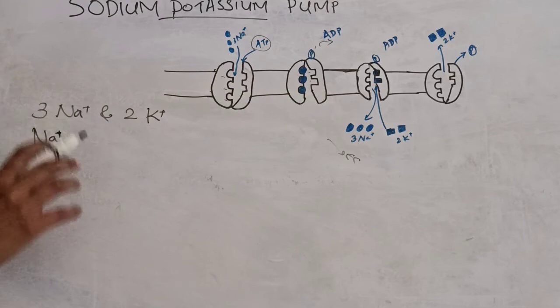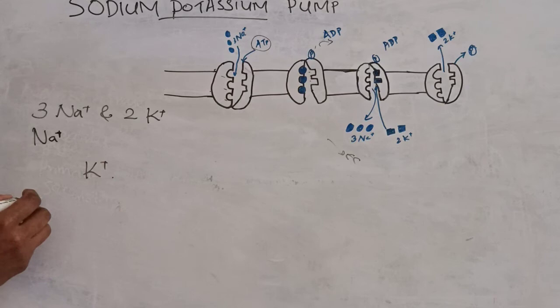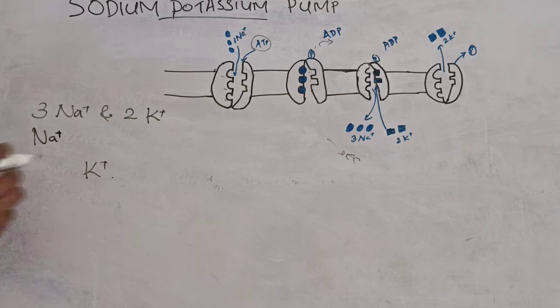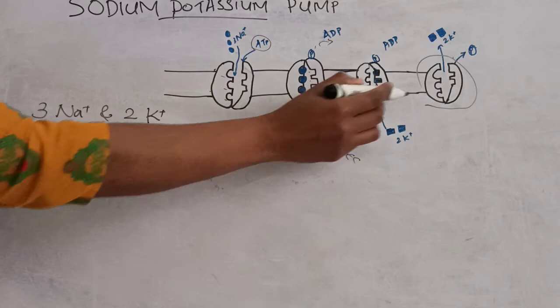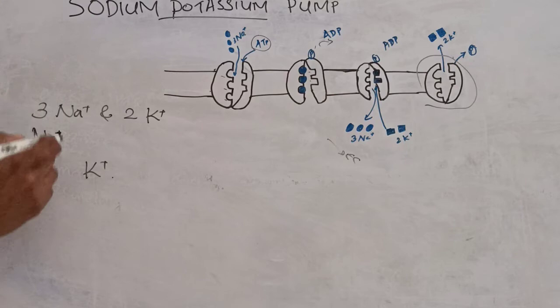This phosphorylated form of the pump has high affinity for potassium ions, so 2 potassium ions bind to the pump. This binding of the 2 potassium ions induces dephosphorylation of the pump — that means phosphate is released — causing another conformational change, and potassium ions are released into the cell. This is the unphosphorylated form of the pump.